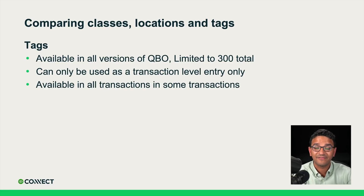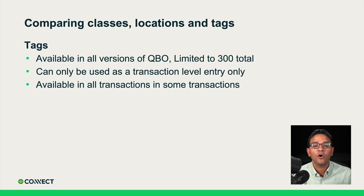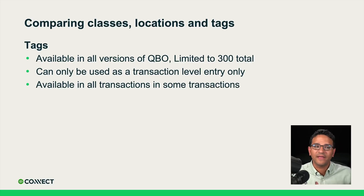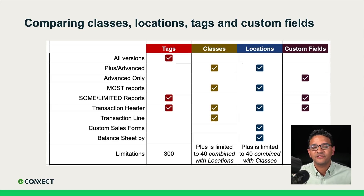Locations can also let you create custom templates for invoices or estimates based on which location you're invoicing from — something you don't get with classes. Finally, we have tags. Tags are available across all versions of QuickBooks Online, limited to 300 total, and can only be used at the transaction level. Tags are available in only certain transactions, not as many as classes and locations, but tags keep getting improved, so they may be available in more places over time.